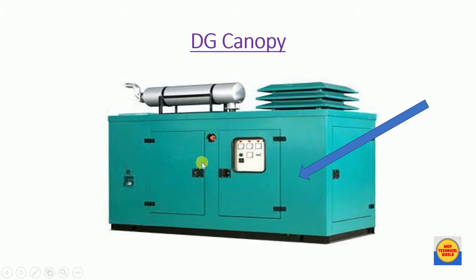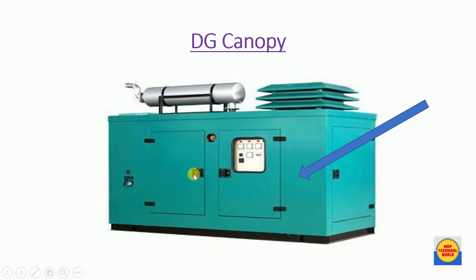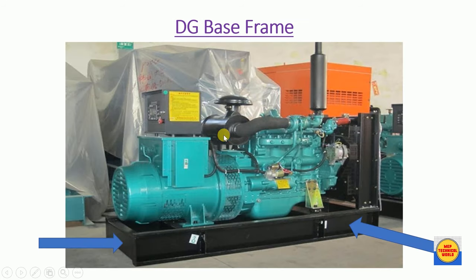The DG canopy is the enclosure of the alternator or diesel engine. It basically provides physical and mechanical protection, and also reduces the sound level of the diesel generator.